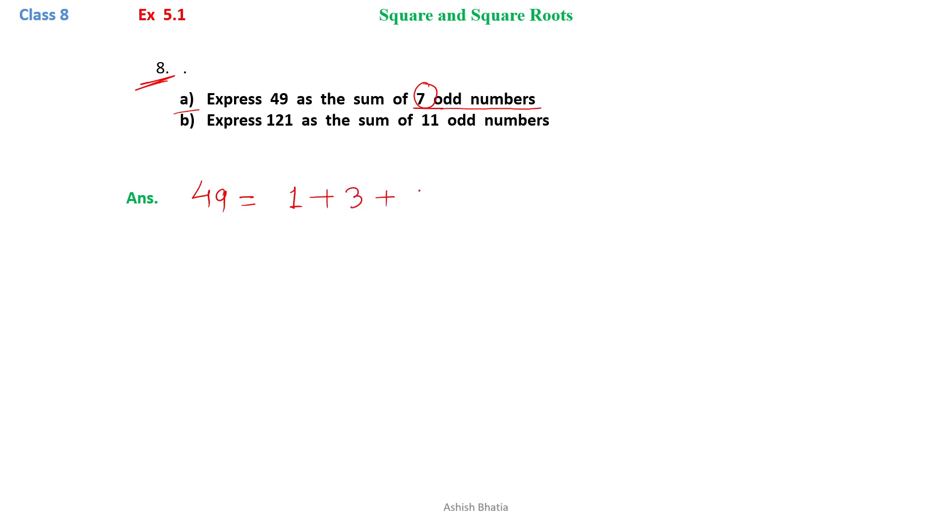It is 1 plus 3 plus 5 plus 7 plus 9 plus 11 plus 13. So we have 49 as sum of these 7 odd numbers.